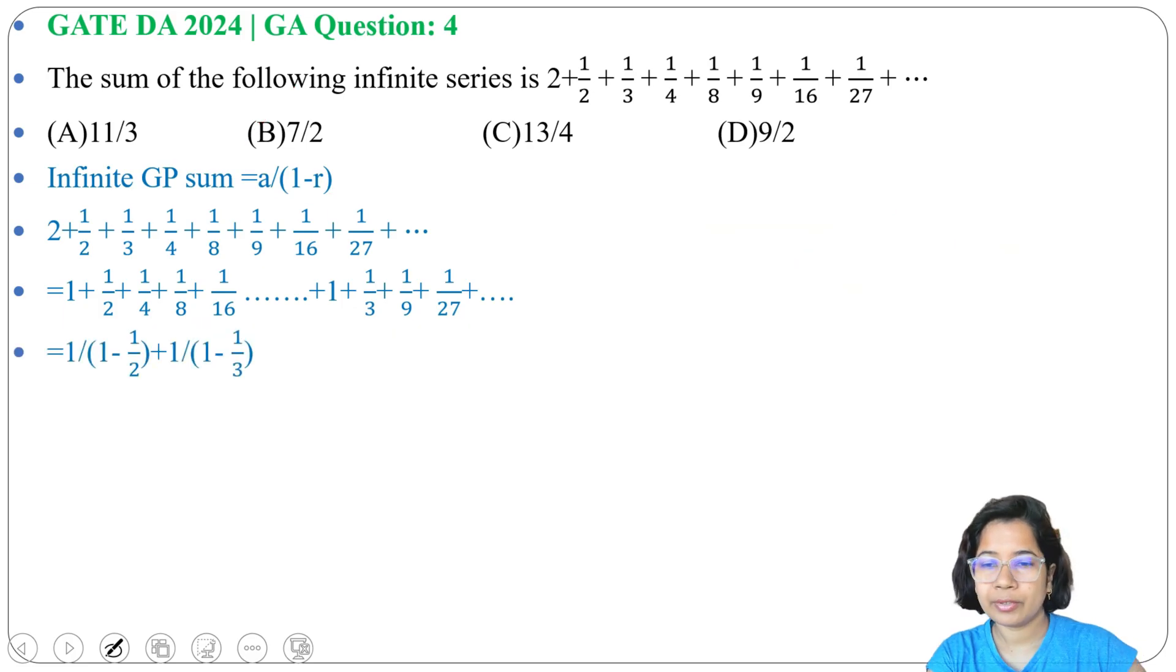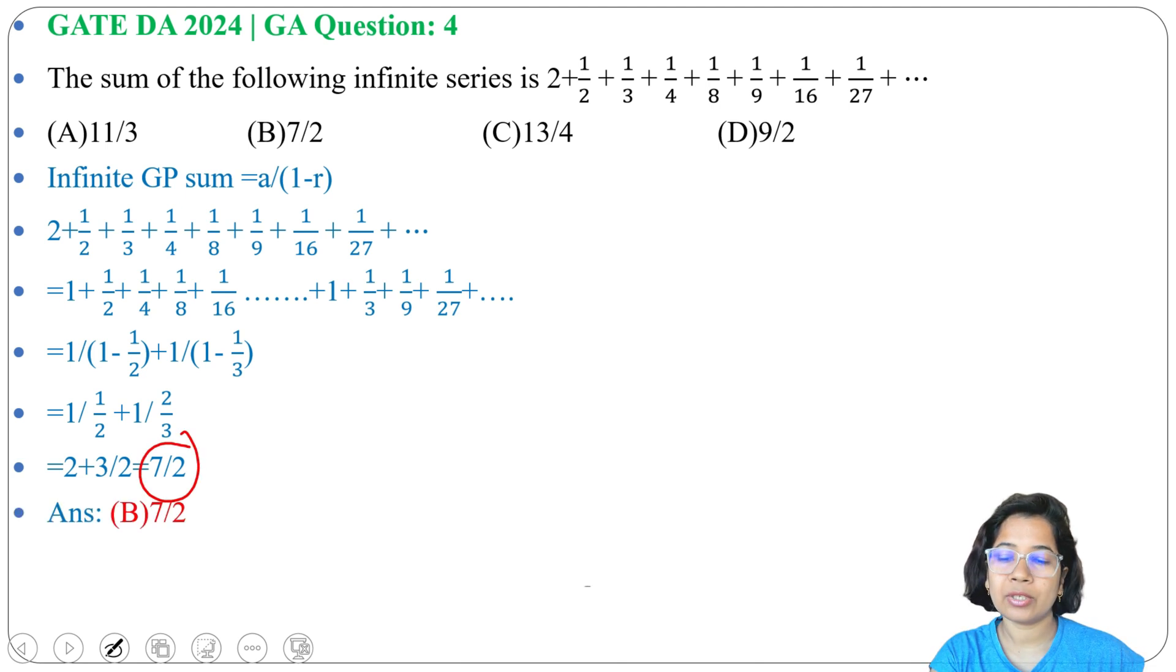After using the formula, we got 1 divided by 1 minus 1 by 2, plus 1 divided by 1 minus 1 by 3. After simplification, we got the answer as 7 by 2. So the answer is option B.